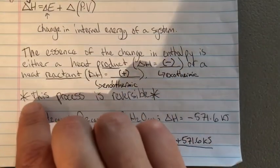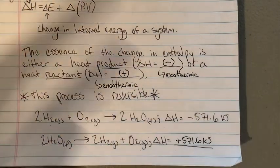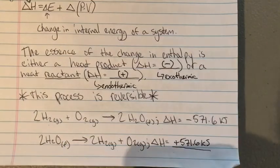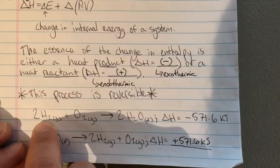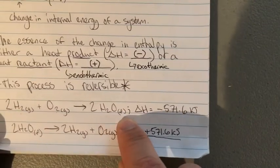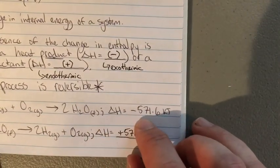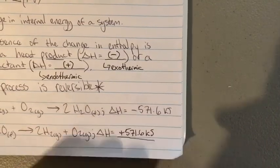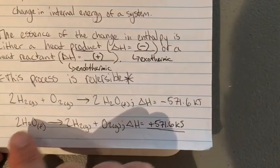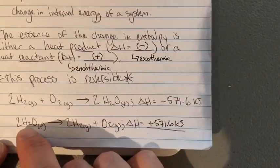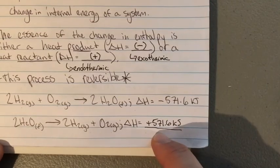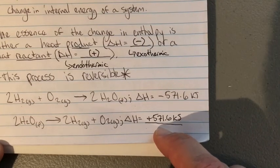These reactions can go in reverse, and you get an equal magnitude in the opposite direction. For example: 2 H₂ + O₂ → 2 H₂O (liquid) has delta H of negative 571 kilojoules — highly exothermic. Flipped around, going from 2 H₂O liquid to 2 H₂ gas and O₂ gas is highly endothermic, requiring a lot of heat from an external source.